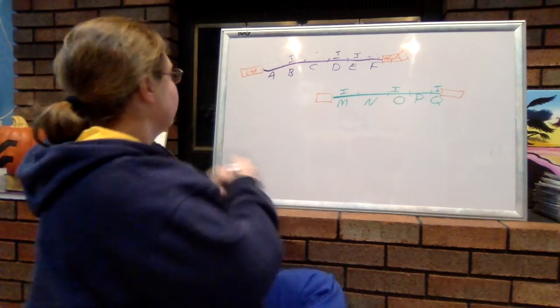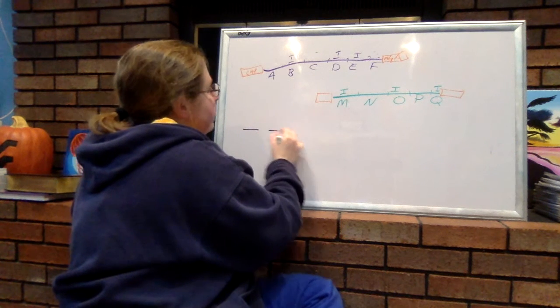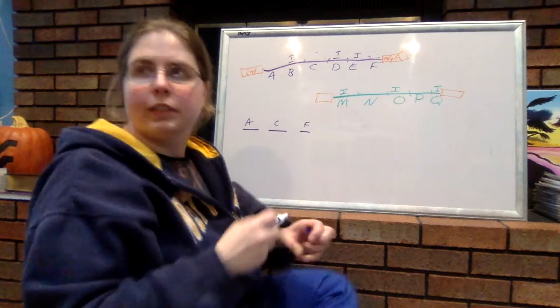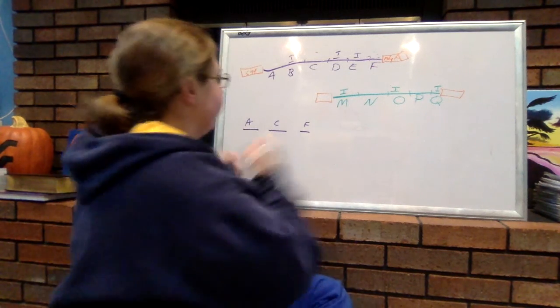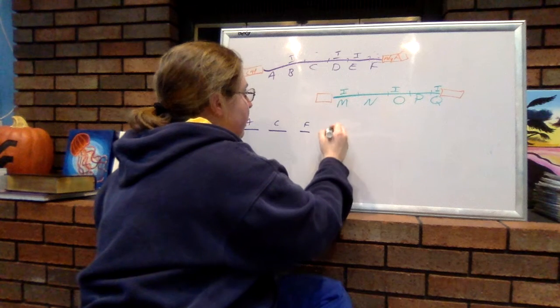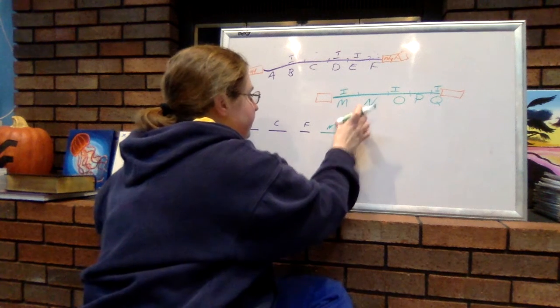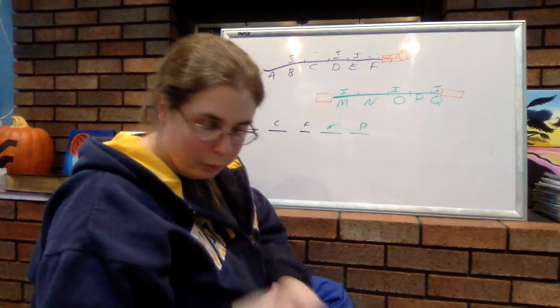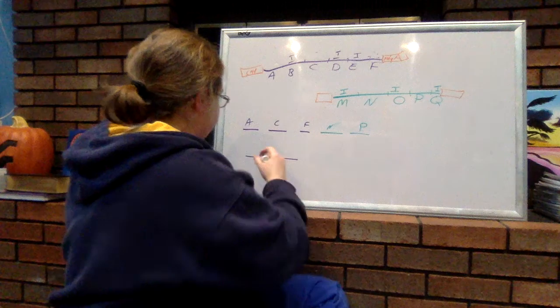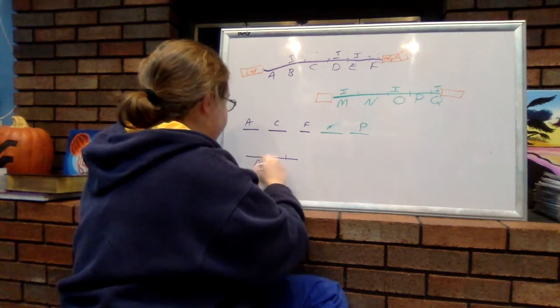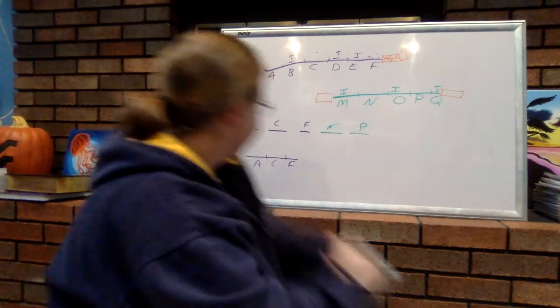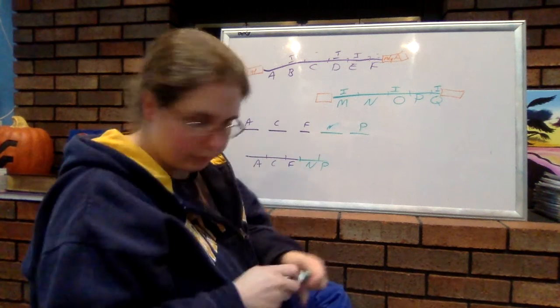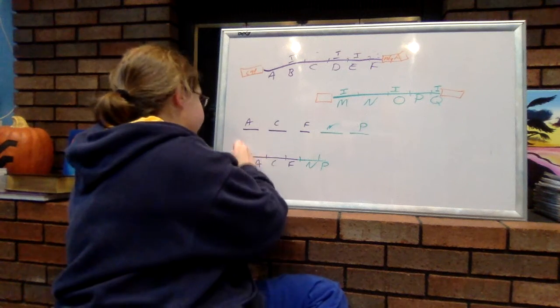So, what that means is that we're going to be left with A, C, F from the first one. And we're going to be left with N, and P on the second one. Then we push them all together. A, C, F. And then we have N, P.